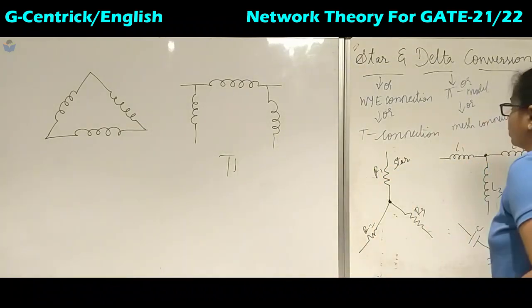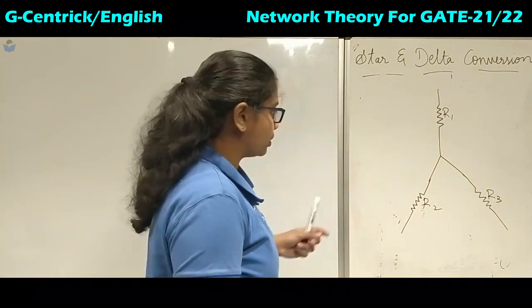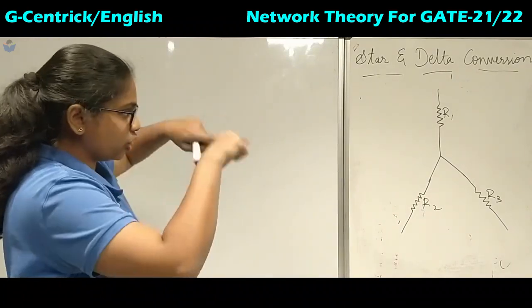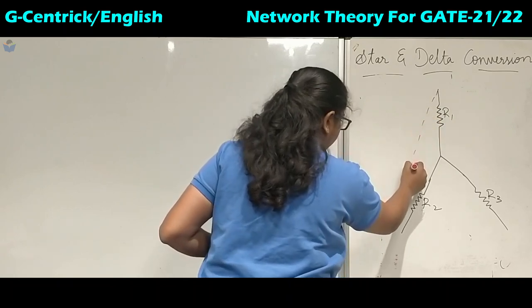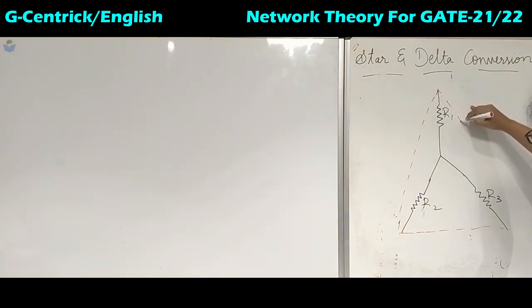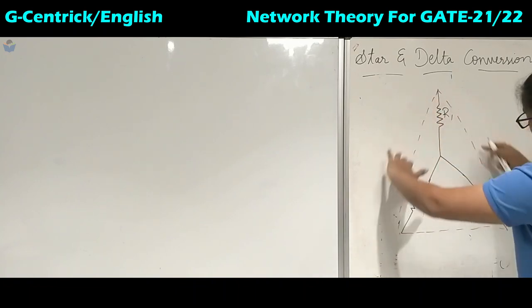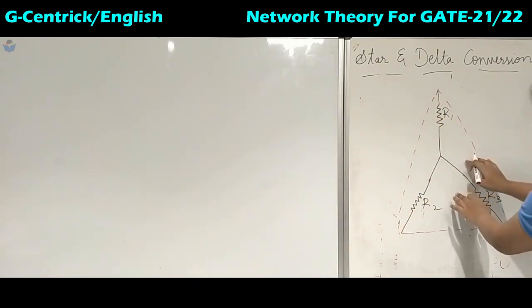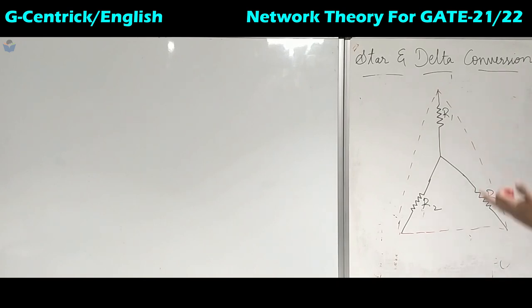Now we will see the conversion from star to delta. This is the star connection and we have to convert it into delta. When star is given, imagine the shape of delta. What we do is join imaginary lines to form the delta connection. We complete the join of these two ends, so now this is in the form of delta. If we have to convert delta to star, we draw the star inside the delta.